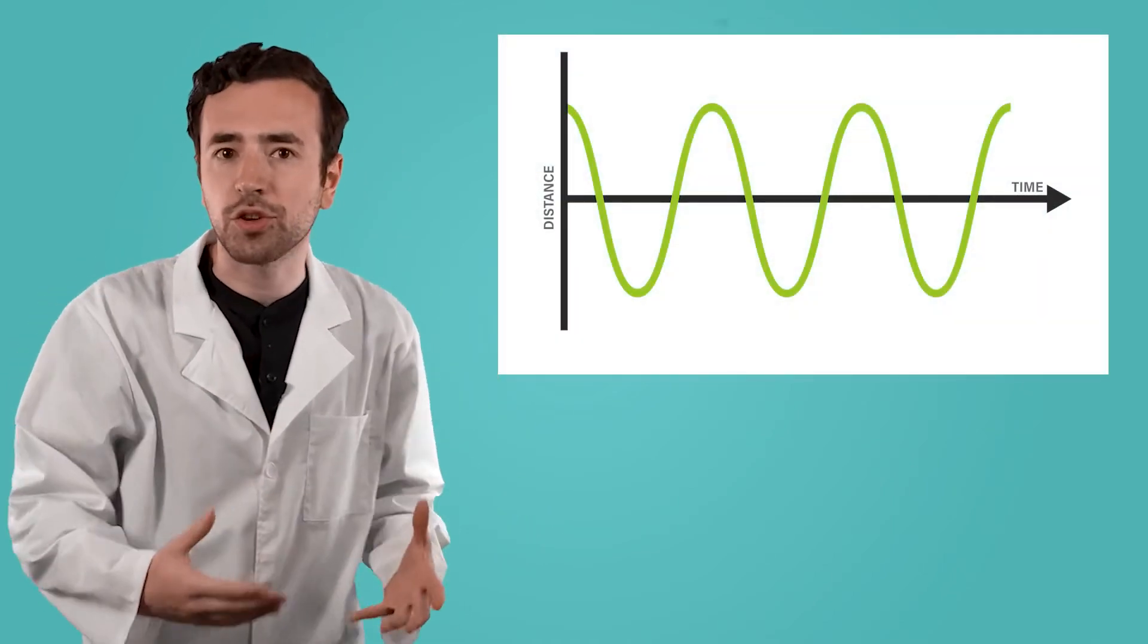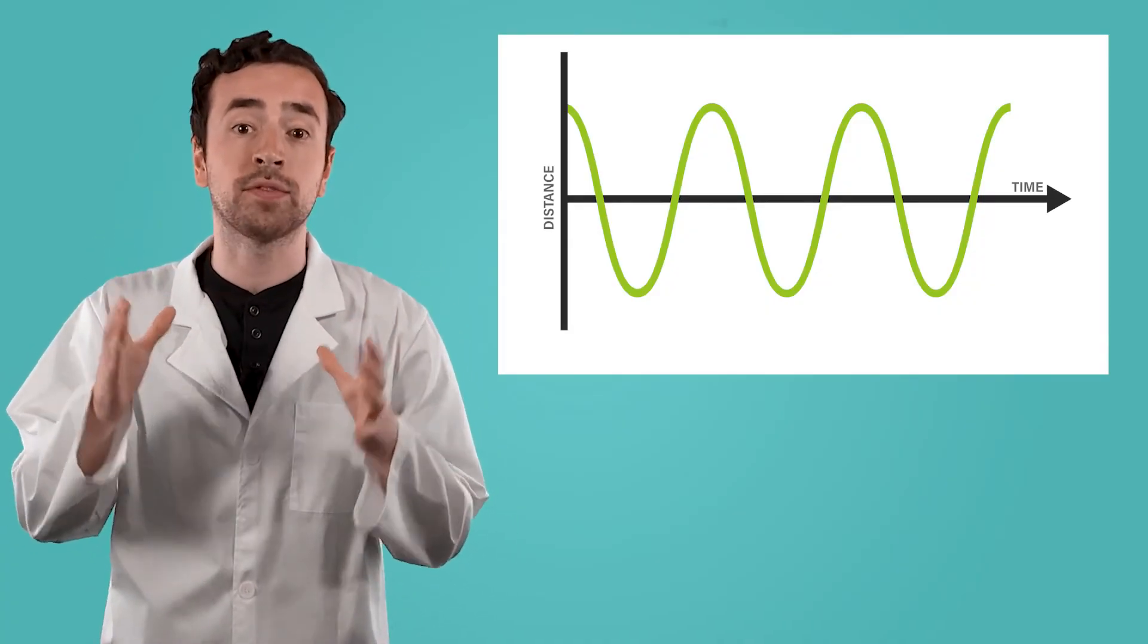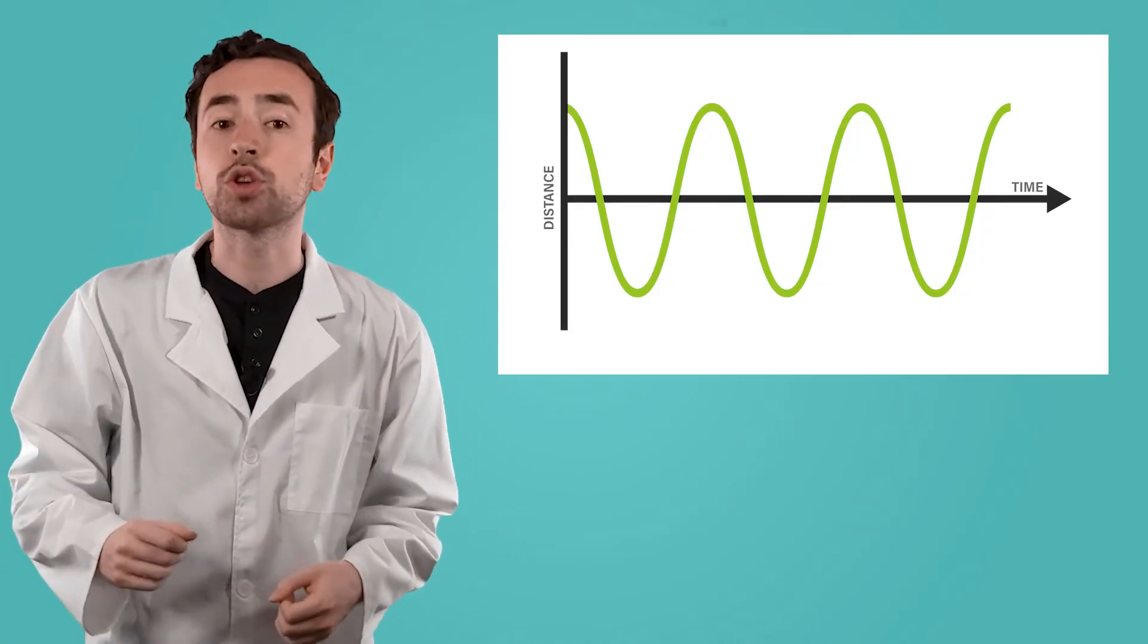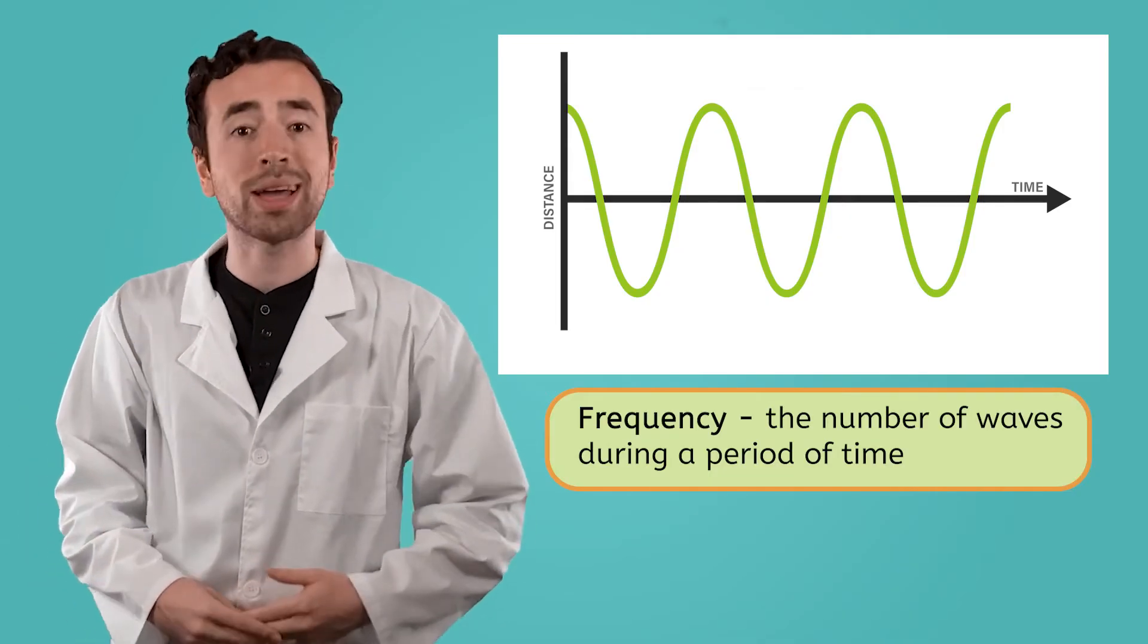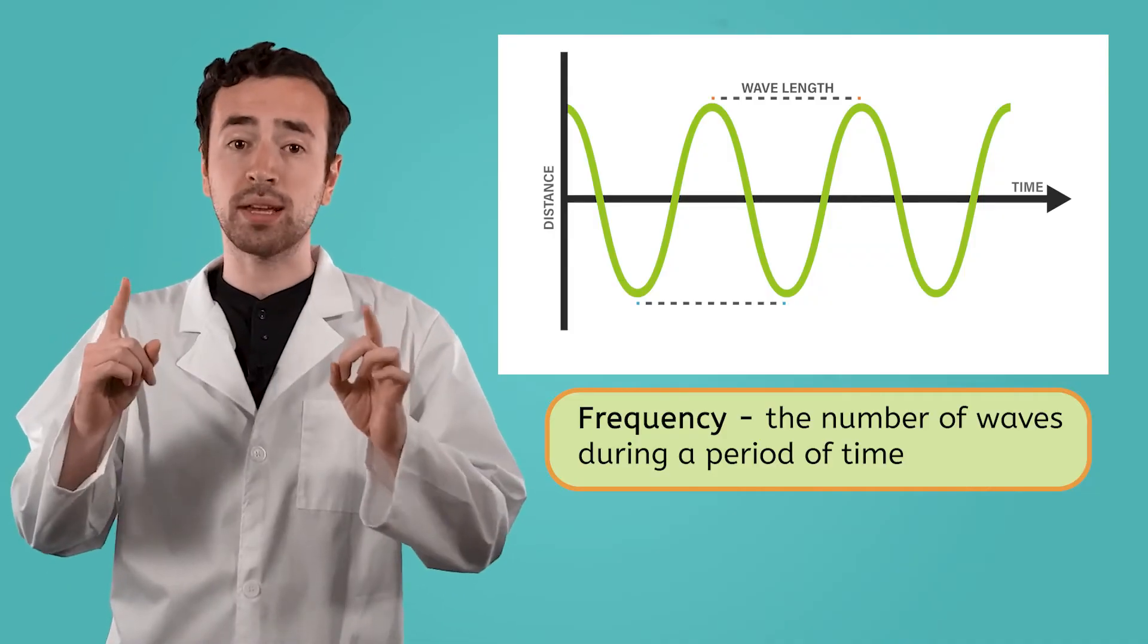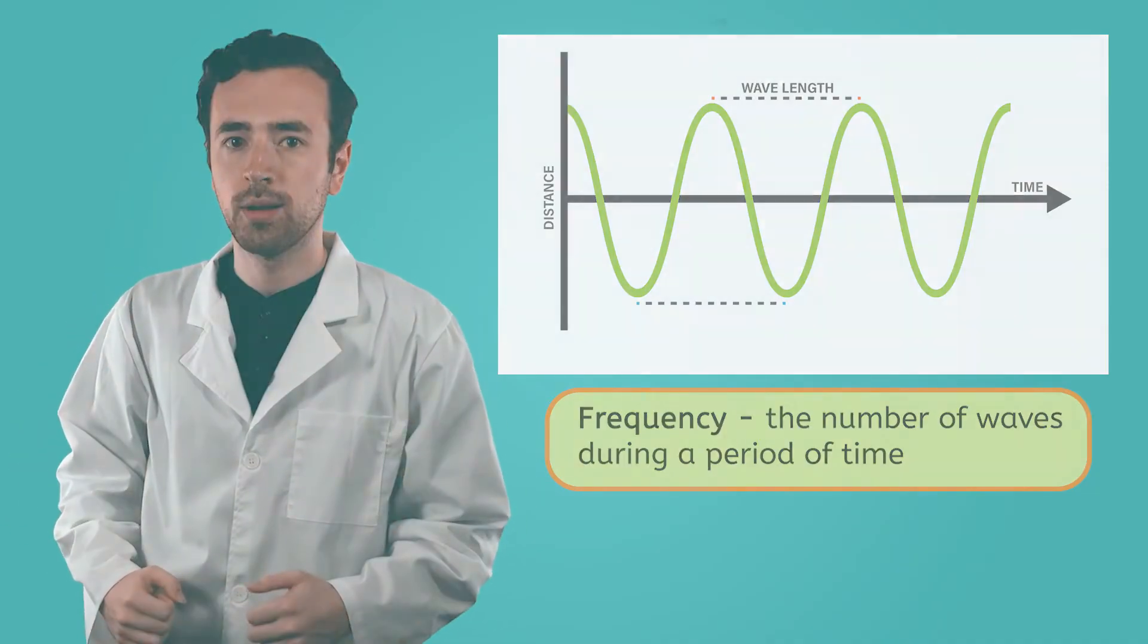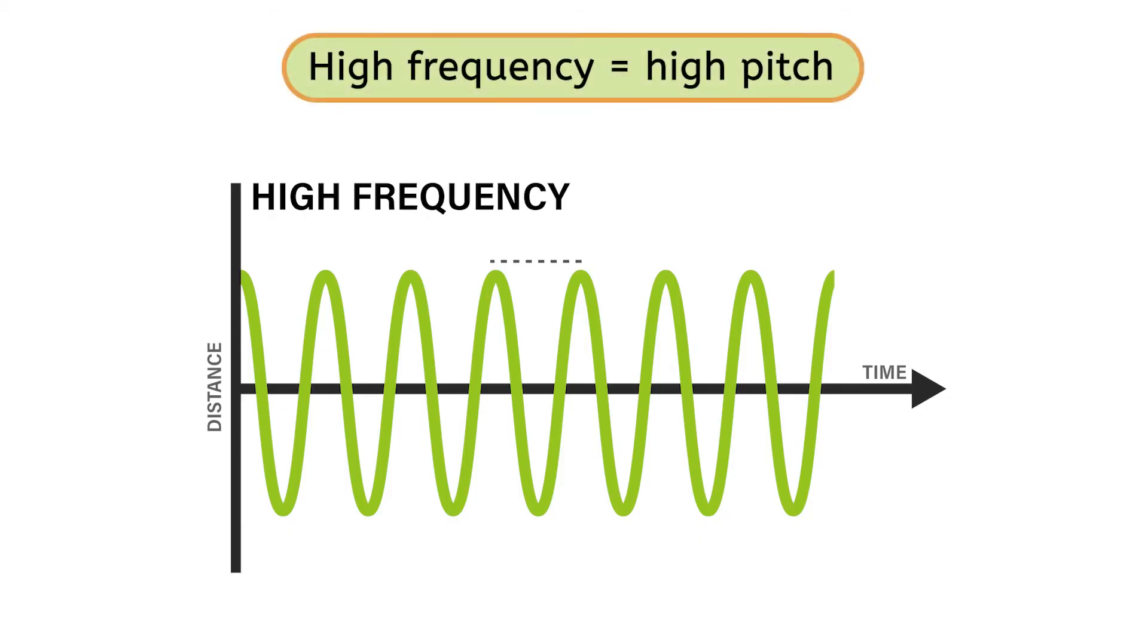The faster matter vibrates, the more sound waves there are during a given period of time. That measurement is called frequency. We could determine the frequency of a wave by looking at its wavelength, or the distance between two peaks or two troughs. A higher frequency means the wave has a shorter wavelength, which makes the wave look kind of squished together. A higher frequency creates a higher pitch.